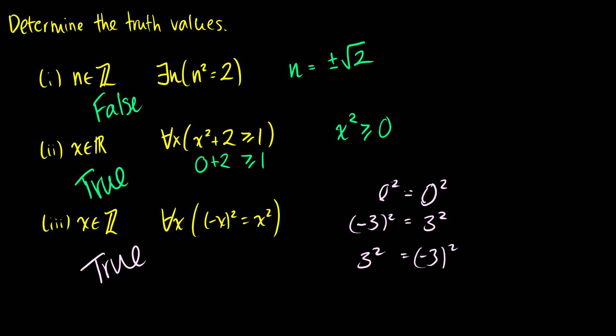I'm not asking you to prove this — I'm just asking you to determine the truth value. We didn't actually need to take general numbers and check; we didn't have to check that negative a squared equals a squared. I just have to see if we could find a counterexample. We couldn't, so it's true.